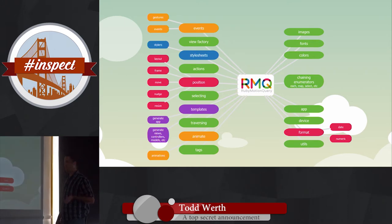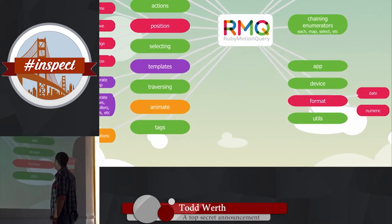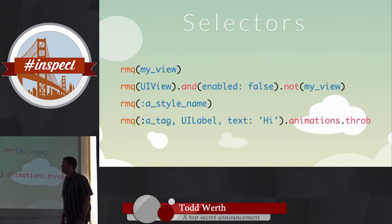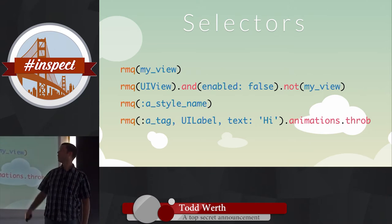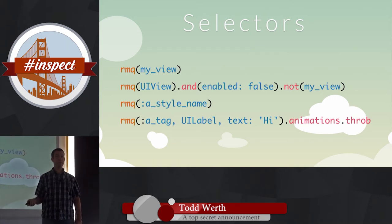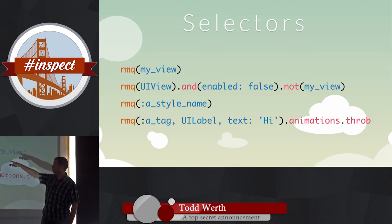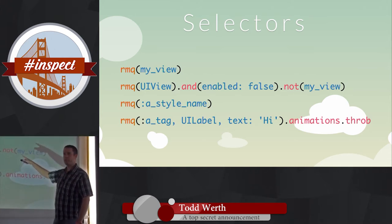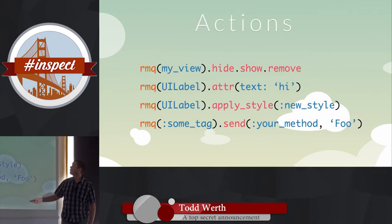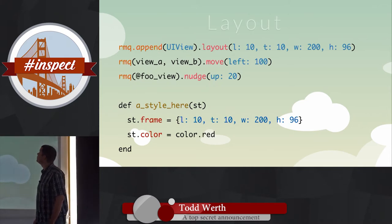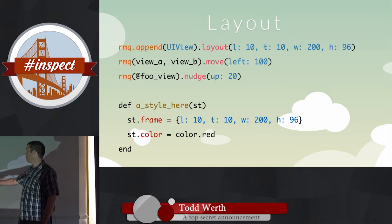Selectors are the first thing — you select views. The most typical way is to select one view or an array of views, and once selected you can do things on them. There are a variety of ways similar to jQuery but typically you just select an actual view and then you can hide, show, remove — that kind of stuff. You can move views around with layout and frame in your styles.